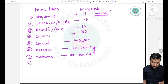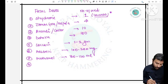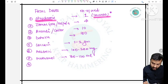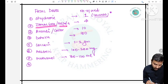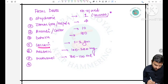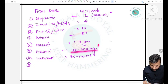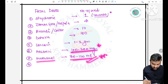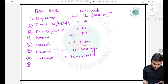Fatal doses of important poisons: strychnine — one crushed seed is sufficient; jamal ghota (Croton) — four seeds; castor — ten seeds; datura — one hundred seeds; cocaine — 1–2 grams; arsenic — 100–200 mg; methanol — 80–120 ml. These are important fatal doses previously asked in exams.